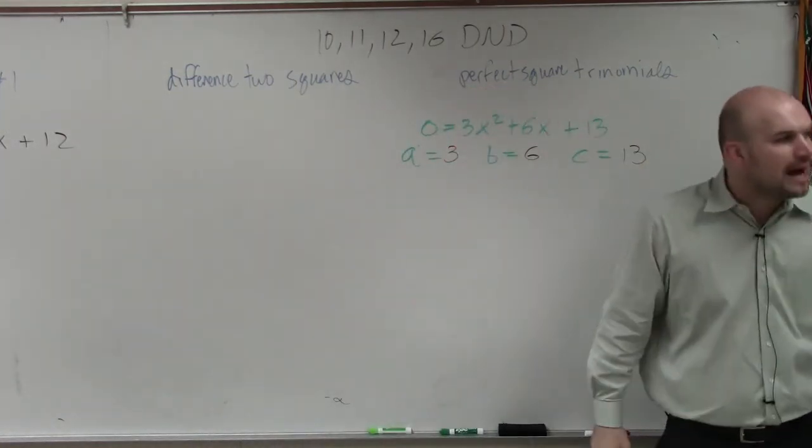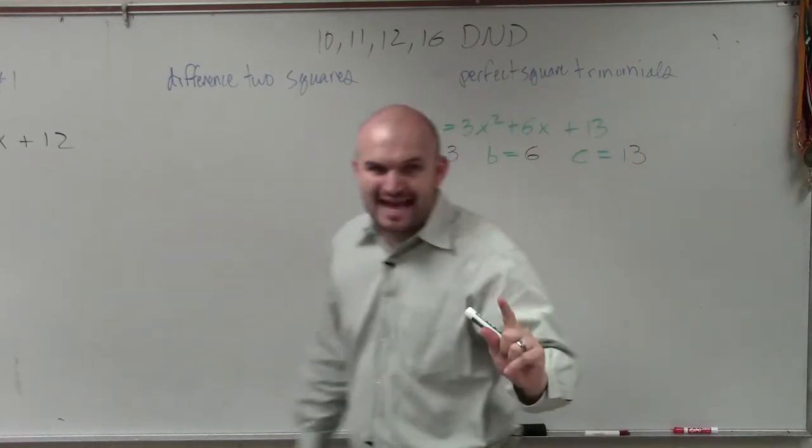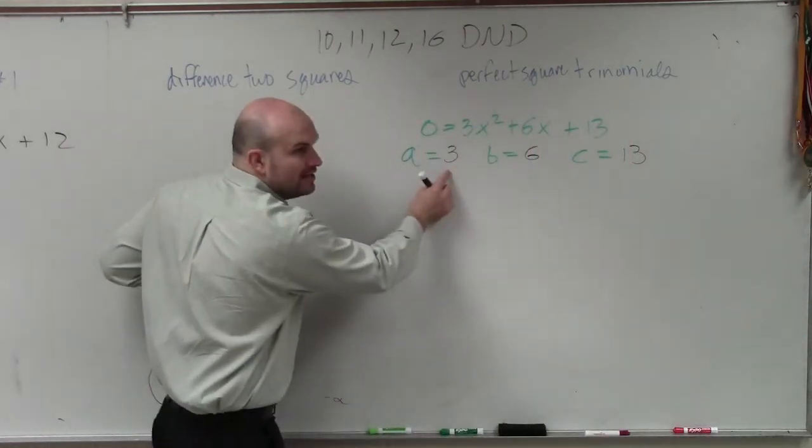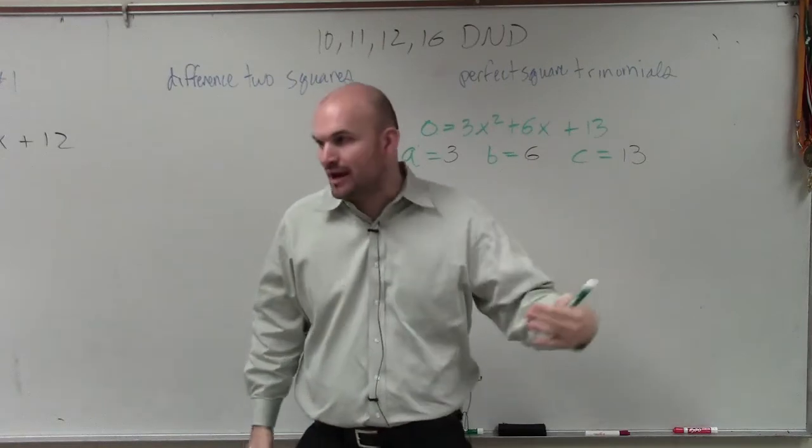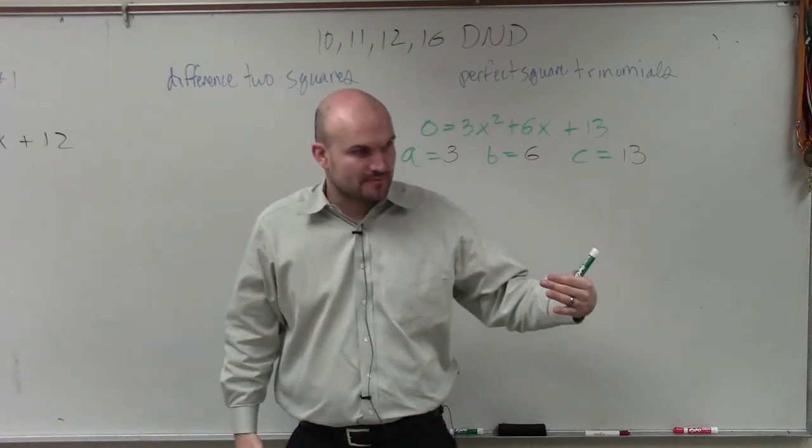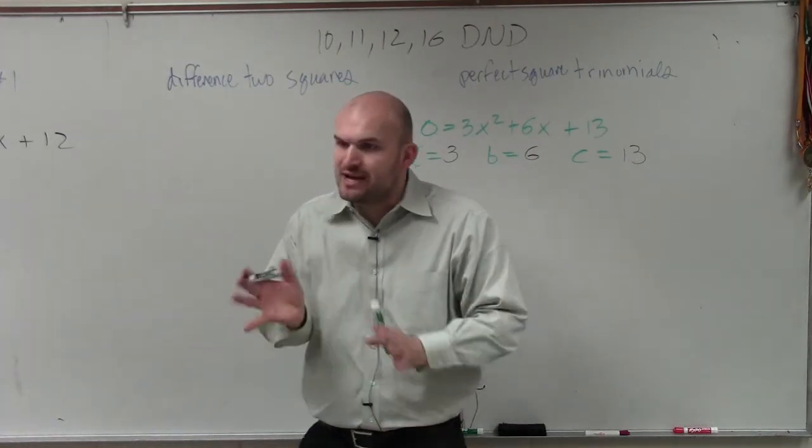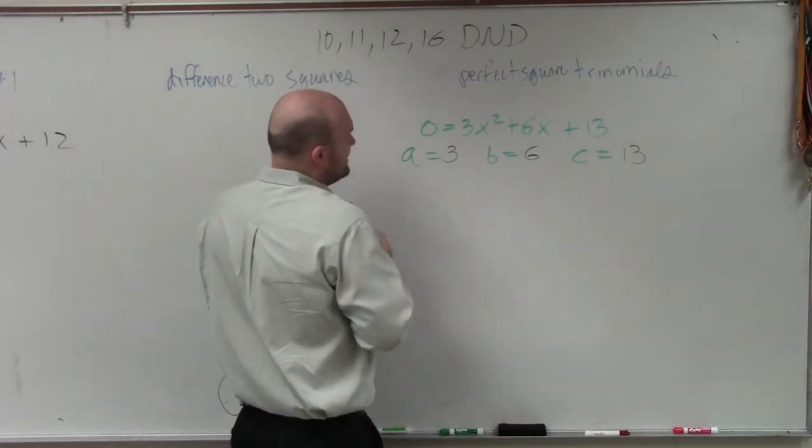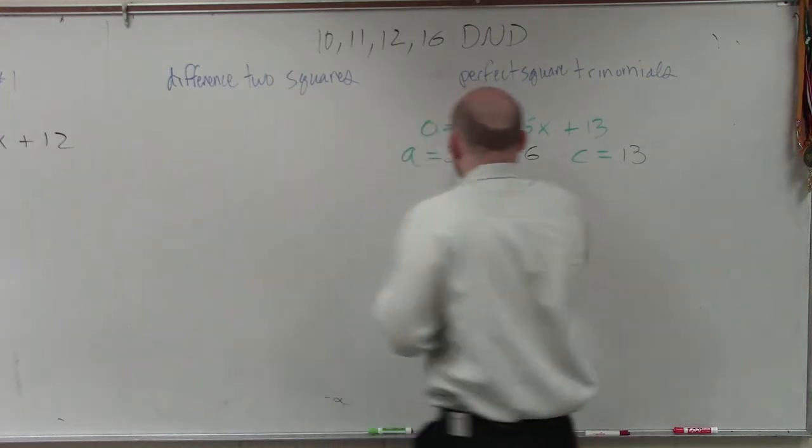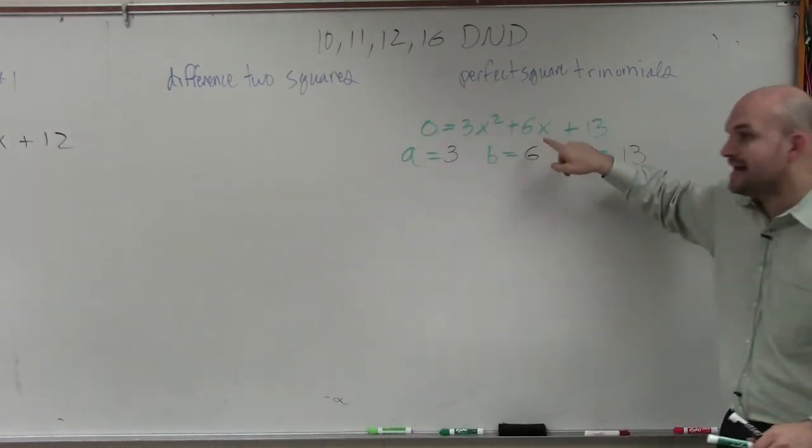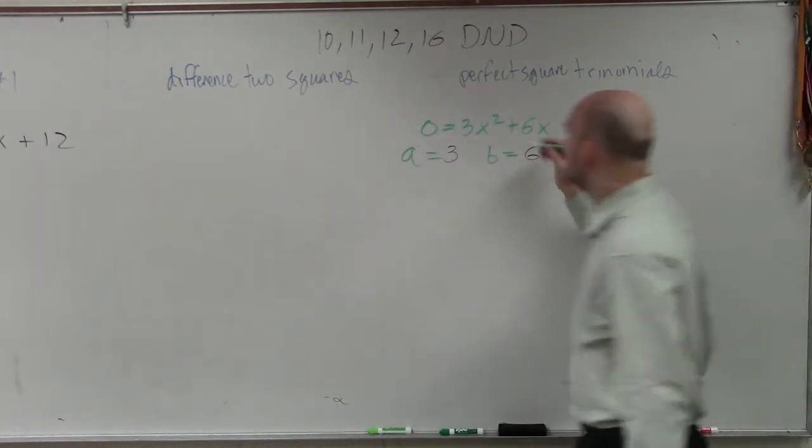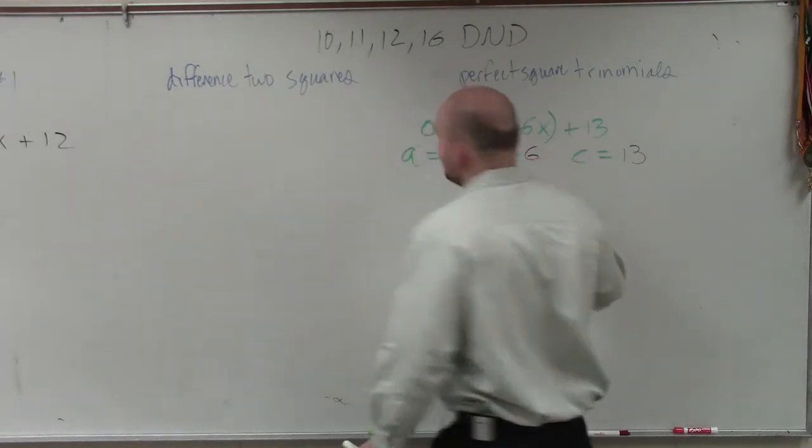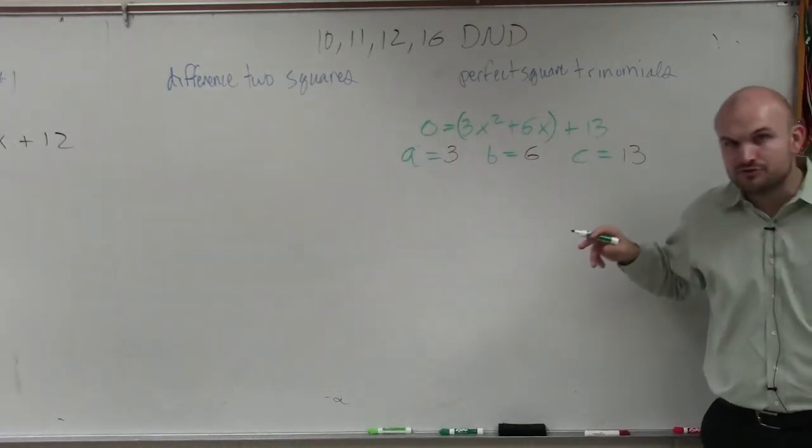Now we have a problem, because whenever A is not equal to 1, you cannot complete the square, the method that we used. So you can't use the same process. We have to make an adjustment. So what we're going to do is I need to factor this out so A is equal to 1. So I need to factor out the 3 so that A is equal to 1. And what I'm going to do is I'm only going to factor out the 3 out of my first two terms.